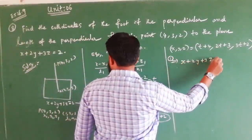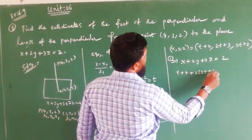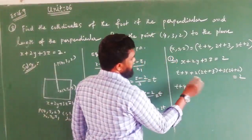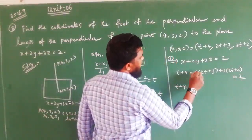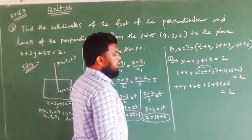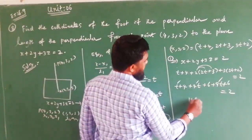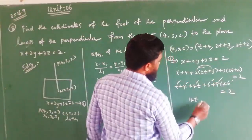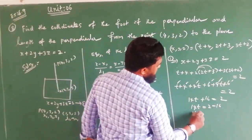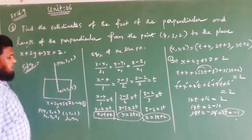Substituting x, y, z into the plane equation and simplifying: T plus 4, plus 2(2T plus 3), plus 3(3T plus 2) equals 2. Expanding: T plus 4 plus 4T plus 6 plus 9T plus 6 equals 2. Adding the T terms gives 14T, and constants give 16. So 14T equals 2 minus 16, that is 14T equals minus 14, and cancelling gives T equals minus 1.